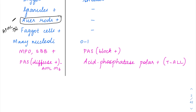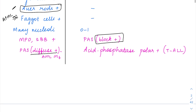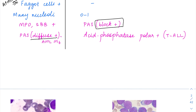Apart from that, the periodic acid-Schiff (PAS) stain is going to give a diffuse kind of positivity in AML M6 alone — normally it is not positive, only in AML M6 is it positive. PAS is going to be positive in ALLs (acute lymphoblastic leukemias), showing a characteristic block positivity. In AML M6 it is diffuse positivity, while in ALL it is block positivity. T-cell ALLs are also going to have positivity for acid phosphatase.